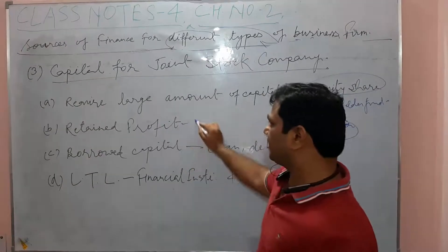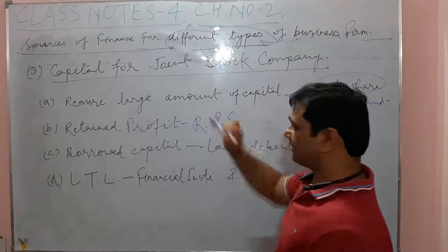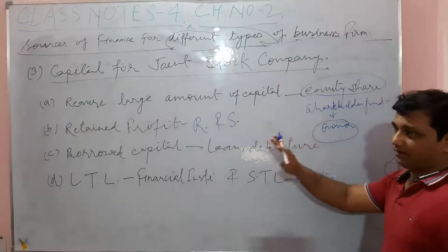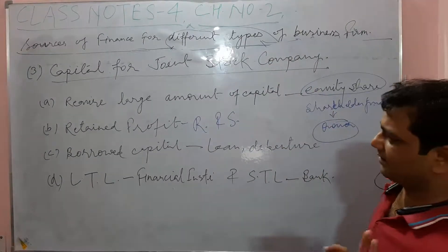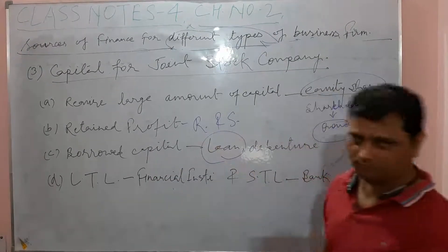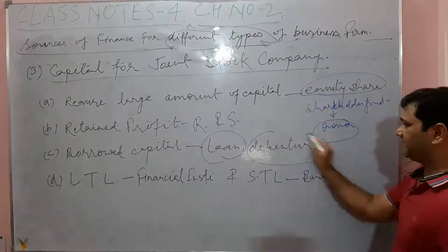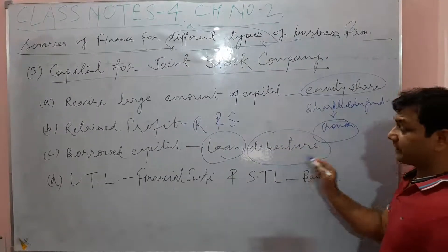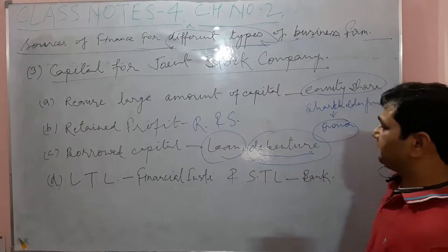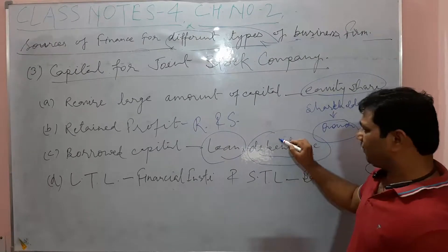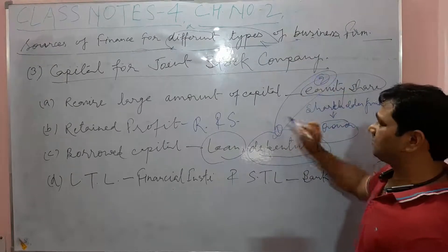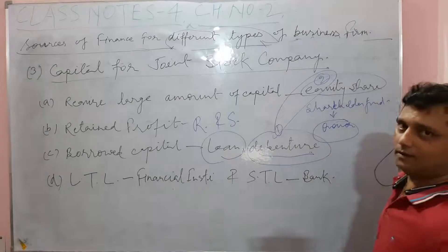The second source for a joint stock company is retained earnings, also called reserves and surplus — same concept as retained profit studied in partnership and sole proprietorship. The third source is borrowed capital in the form of loans and debentures. Two new concepts here are debentures and equity shares, which we will study in detail in our third chapter.